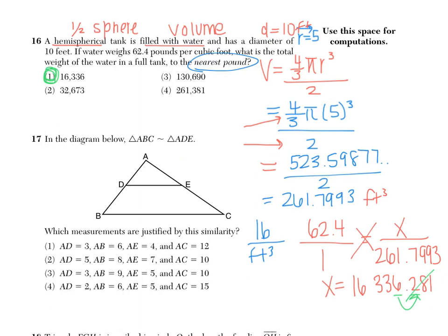Number 17 says, in the diagram below, triangle ABC is similar to triangle ADE. So this large triangle ABC is similar to triangle ADE. With similar triangles, angles are congruent but sides are in proportion. Our choices ask which measurements are justified by this similarity: AD equals 3, AB equals 6, AE equals 4, AC equals 12. AB corresponds with AD, and AE corresponds with AC, so we set up proportions using corresponding sides.